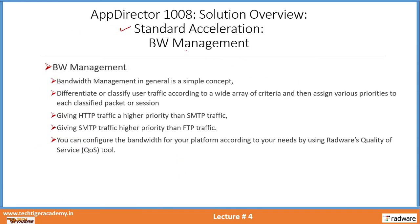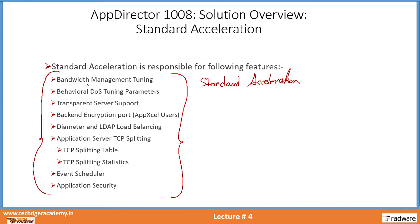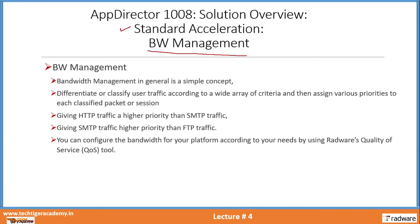This slide covers standard acceleration — specifically bandwidth management. Bandwidth management is the first feature in standard acceleration. In general, bandwidth management is a simple concept: differentiate or classify user traffic according to a wide variety of criteria, and then assign various priorities to each classified packet or session. For example, you may want to give a good amount of bandwidth to VIP users — this is how you split bandwidth between normal users and VIP users.